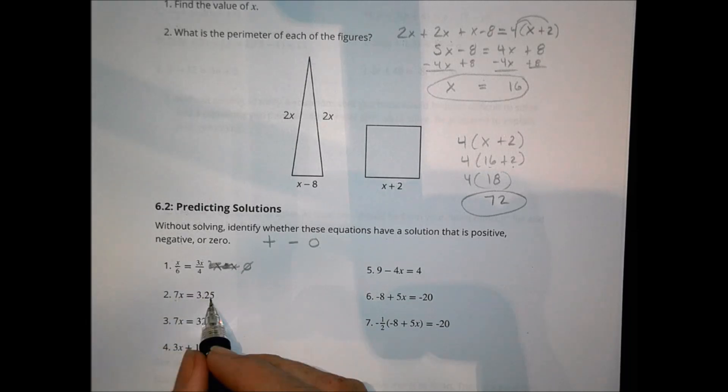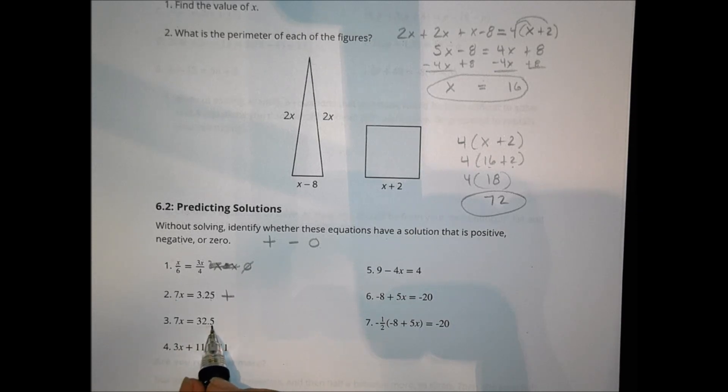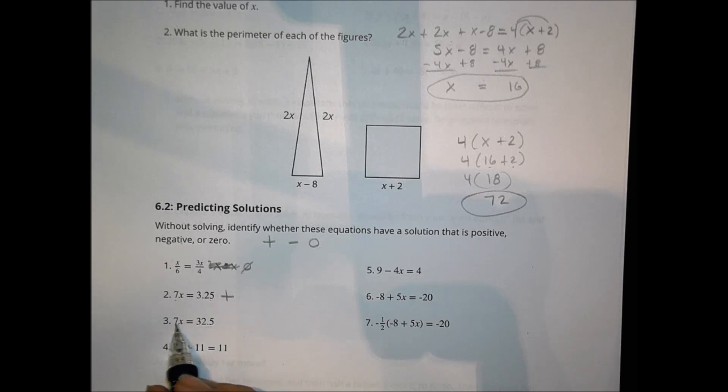Over here, I'm dealing with two positive numbers, and so if I was to divide this, I'd end up with x being equal to a positive number. And same is true here. Even though I have a different decimal, 32.5 is a 3.25, when I divide, I end up still with a positive number there.